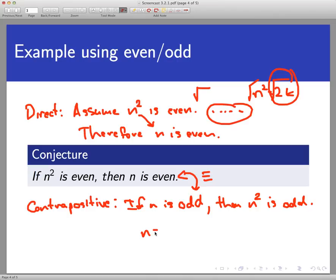If n is odd, that means there's an integer out there, k, such as n equals 2k plus 1. And it's easier to conceptualize squaring both sides of this equation than it would be taking the square root of both sides of this equation. So this seems like a good opportunity to use the contrapositive. So let's go with it.